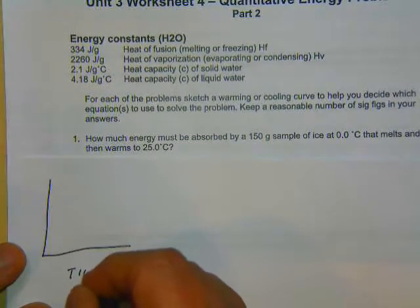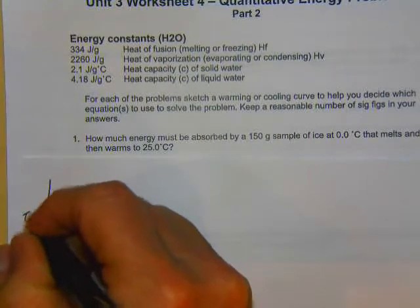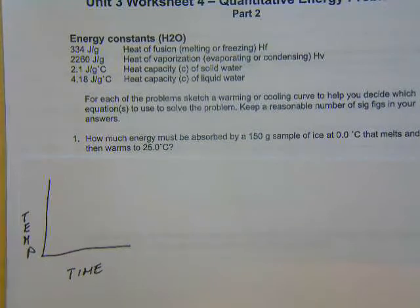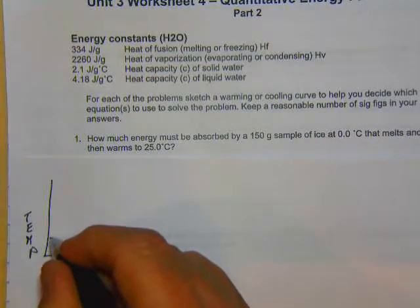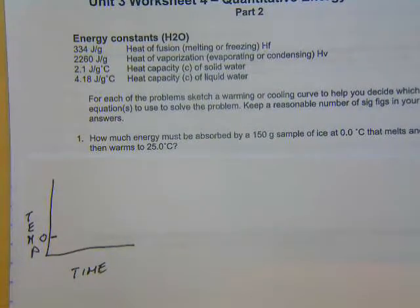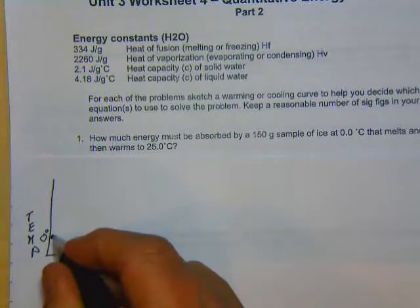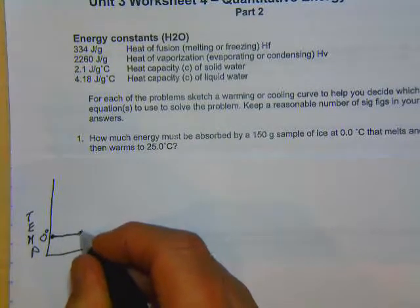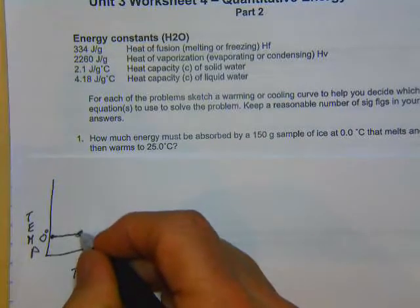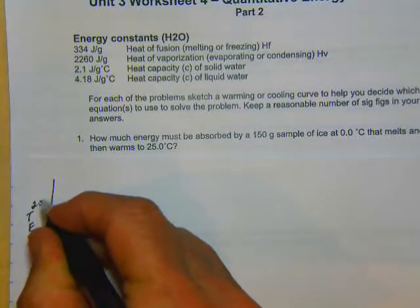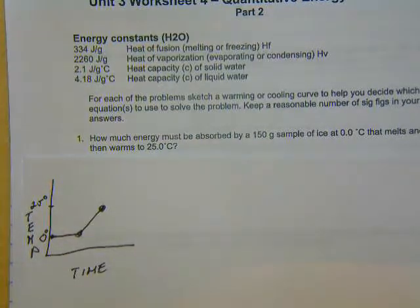We've got time on one axis and temperature on the other. We have 150 grams at zero degrees Celsius. It's going to melt, and then it's going to warm to 25 degrees. So we've really got two processes going on here: we've got to melt the ice, and then we're going to warm the liquid water up to 25 degrees Celsius.